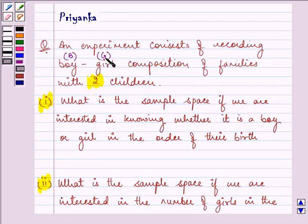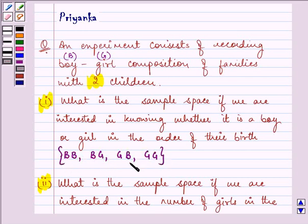Now here in each family there are two children. So the possible outcomes are whether there can be two boys in the family or one boy and then girl or firstly girl and then boy or two girls in a family. So this is the required sample space for the first part.